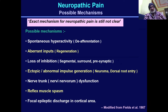The possible mechanism has not been completely understood, but the possible mechanisms include spontaneous hyperactivity from de-afferentation or afferent input causing regeneration. There is also loss of inhibition at the segmental level, and there may be ectopic or abnormal impulse generation due to neuroma, dorsal root entry, or reflex muscle spasm. These are the possible mechanisms blamed for neuropathic pain formation.